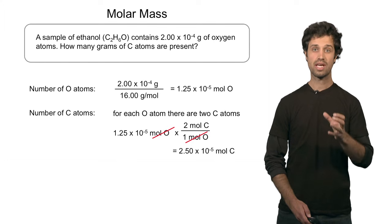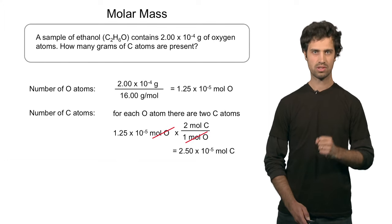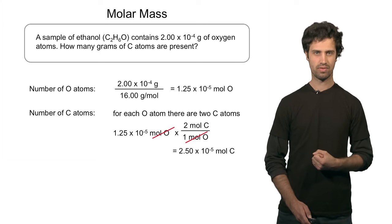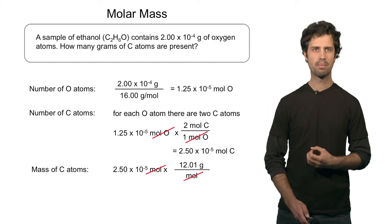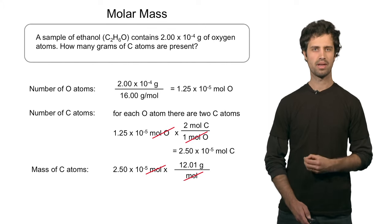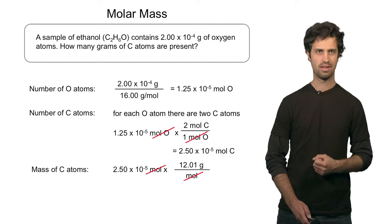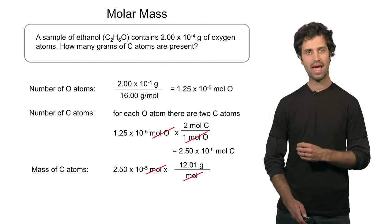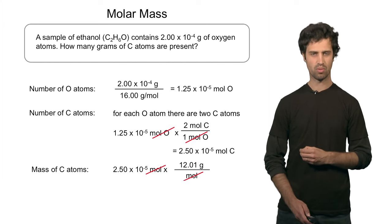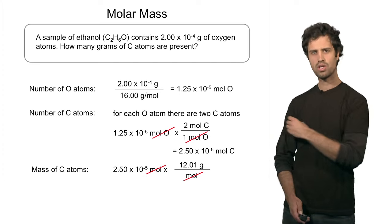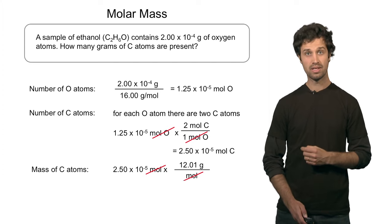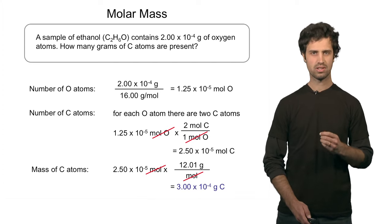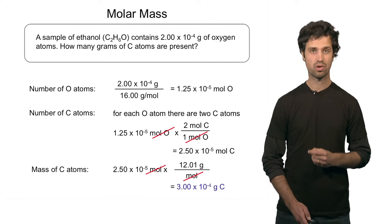The last step is to take the moles of carbon and find the corresponding mass. I multiply the moles of carbon by the molar mass of carbon: 2.5 times 10 to the minus 5 moles times 12.01 grams per mole. The unit of moles cancels and my answer is in grams: the result is 3.0 times 10 to the minus 4 grams of carbon — that is how much carbon by mass is in this sample of ethanol.